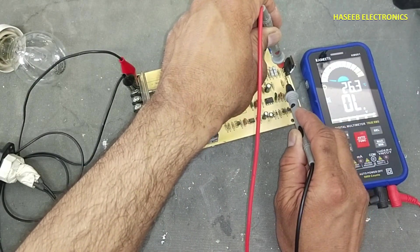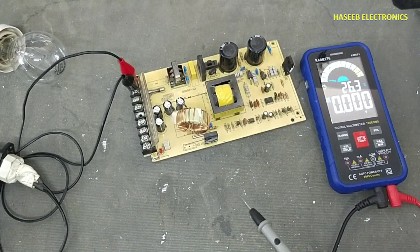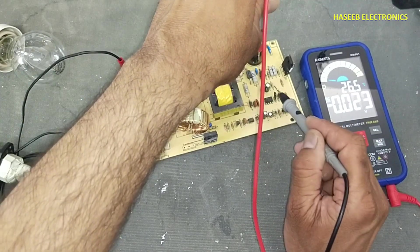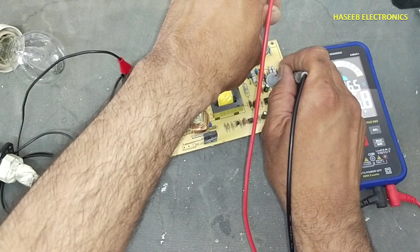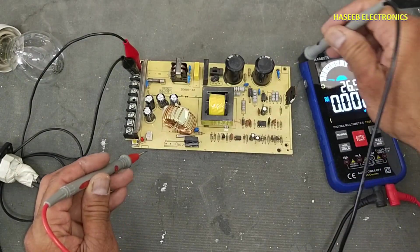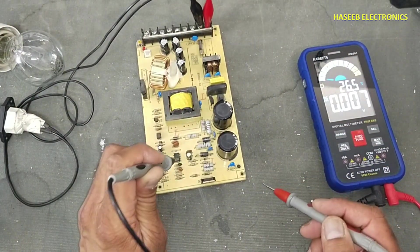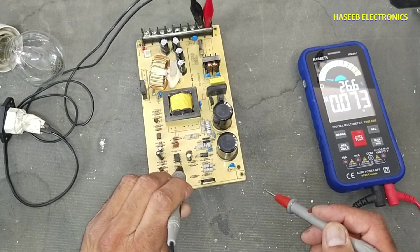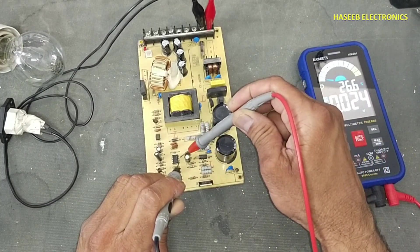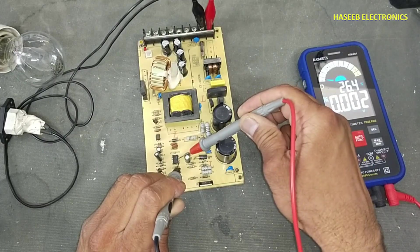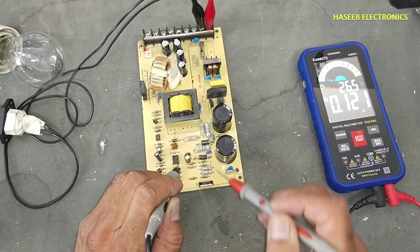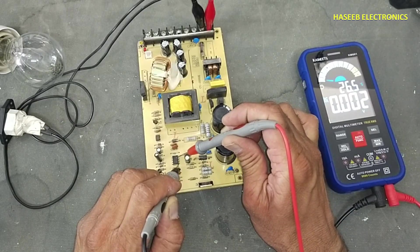Let's check drain to source voltage. 326 volt. Let's check voltage across this zener diode. It doesn't have any voltage. That means it is not switching. Now we will check supply voltage of this IC UC3845. Pin 5 is ground. Pin 7 is supply pin. There is no voltage. And if we check pin 8, pin number 8 must have 5 volt reference.